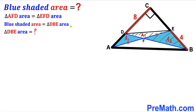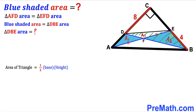Now let's recall the area of a triangle formula: area equals one-half times base times height. For triangle DBE, if we label one side as our base then this is going to be the height of triangle DBE.